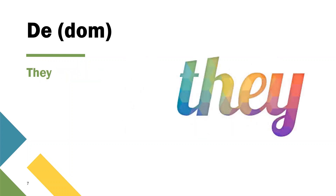And the next one is 'dom'. We write it like D-E. You can read it as 'dom' or 'they' — both are correct. Some people say it as 'dom', some say it as 'they', and both are correct. The meaning is 'they' — third person plural, T-H-E-Y in English. Here we write it as 'de'.